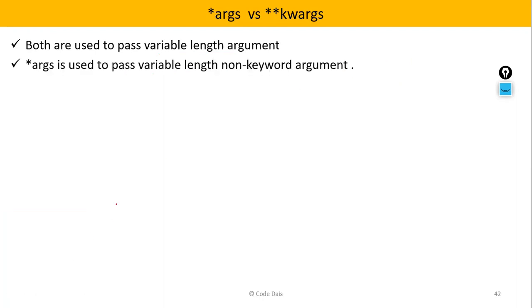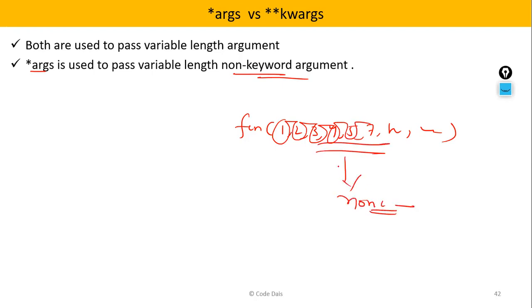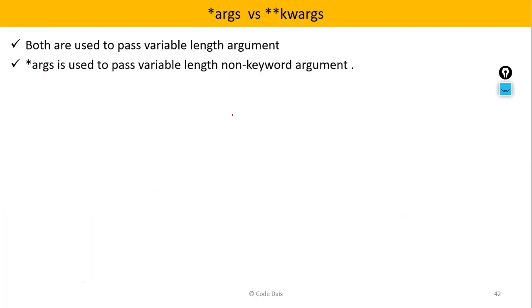Next, *args is basically used to pass variable length non-keyword arguments. That means at the time of calling, we can pass values like 1, 2, 3, 4, 5, 7, 'hello', 'hi' — like this we can pass. We will pass only values, that's why these are called non-keyword arguments.